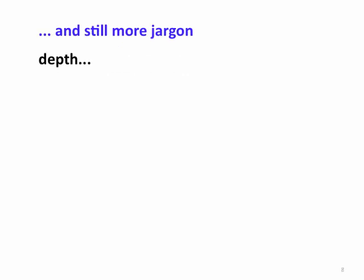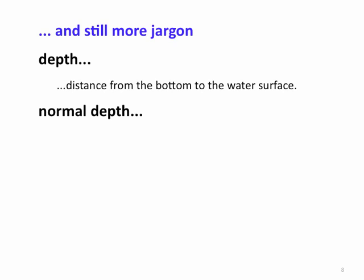Let's talk about jargon for depth. Depth is the distance from the bottom to the water surface. Normal depth is a particular depth — the depth when the channel is at its normal flow. Remember, normal flow is where the flow wants to be, not where it is, but where friction balances gravitational acceleration.